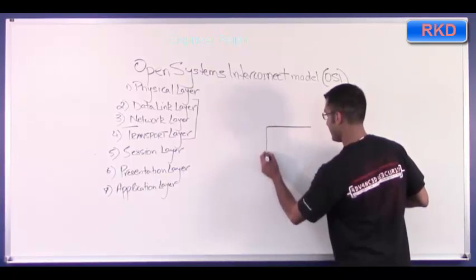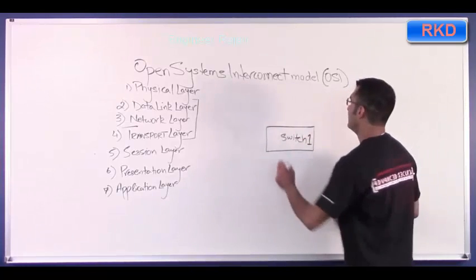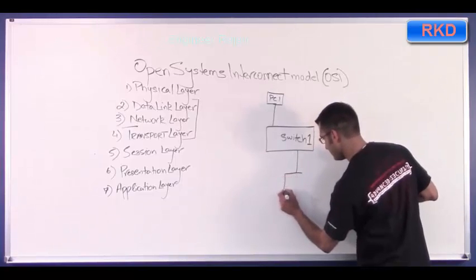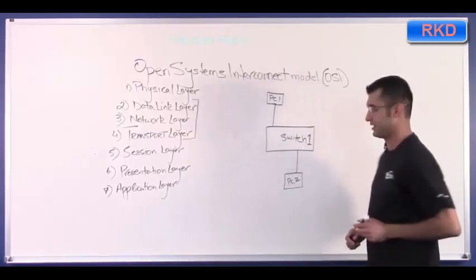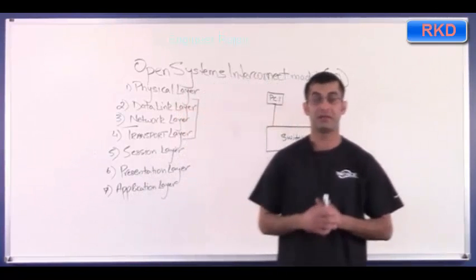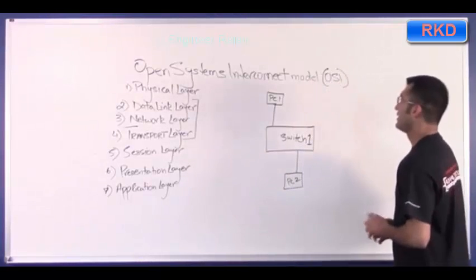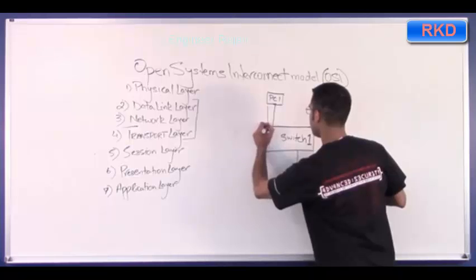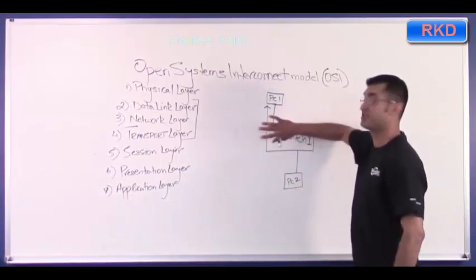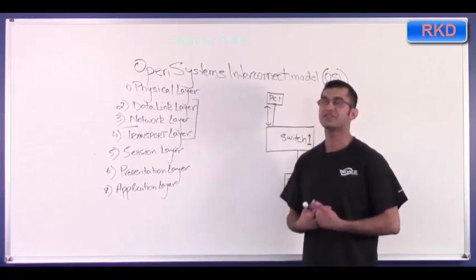With the data link layer — let's say you have a switch, we'll call it switch one, and you have two PCs connected: PC one and PC two. Earlier I said that the data link layer deals with transmission over the local data link, meaning between two directly connected devices. People take that to mean the link between PC one and switch one is one data link — that is incorrect. The switch itself is one data link. When you draw the switch out in a diagram, that is considered a physical diagram.